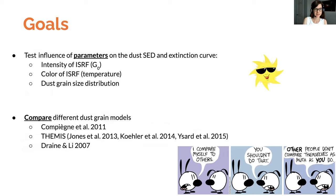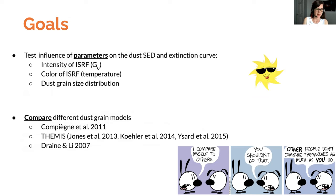The first goal is to test the influence of different parameters on the dust spectral energy distribution and extinction curve. The parameters we explored are: the intensity of the interstellar radiation field, the color of the radiation field (or temperature), and the size distribution of the dust grains. We also compared different dust grain models, including Compiegne et al. 2011, the THEMIS model, and the Drain and Lee 2007 model.